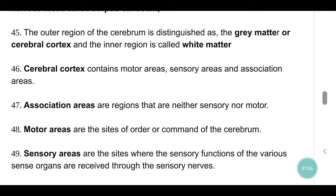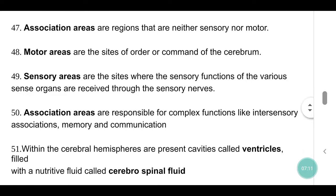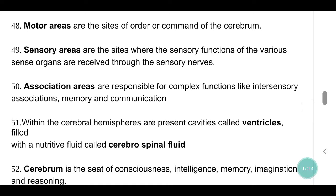Association areas are regions that are neither sensory nor motor. Motor areas are the sites of commands of the cerebrum. Sensory areas are the sites where sensory functions of the various sense organs are received through sensory nerves. Association areas are responsible for complex functions like inter-sensory associations, memory and communication.